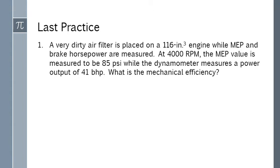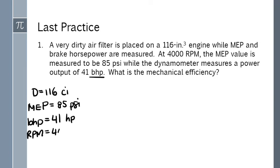We have a dirty air filter and we have an engine displacement, 116 CI cubic inches. The MEP is 85 psi and we're getting a brake horsepower, we'll use that in a bit, of 41. And we are having an engine speed of 4,000.